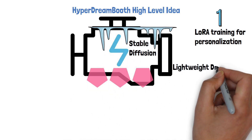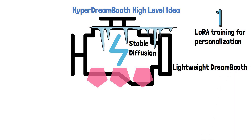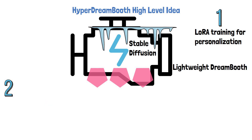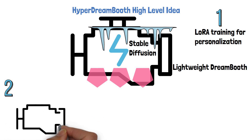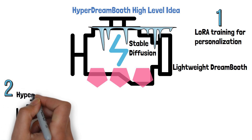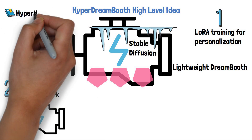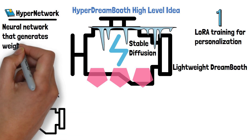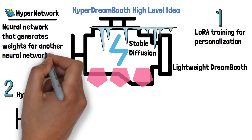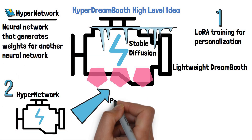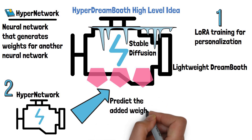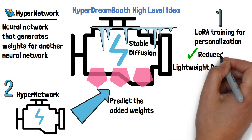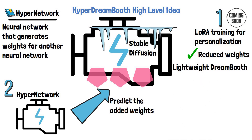This part is called LightWeight DreamBooth, or LIDB. This by itself is not a new method and was already tried, but here the researchers don't want to go through this process for each personalized model. So here comes step 2, where we also train a HyperNetwork model — a neural network that generates weights for another neural network. In this case we train the HyperNetwork to predict the added weights instead of going through LoRA training. To keep the HyperNetwork smaller, they use reduced weights.